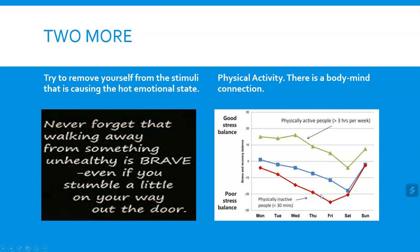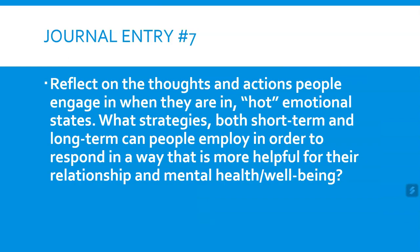Any combination of these four techniques should help you regulate those hot emotions. We all, as human beings, experience hot emotions — that's part of being human. However, as you develop your skills and techniques, you can regulate yourself into an emotional state that's more agreeable to you. Now we're going to write our journal entry: reflect on the thoughts and actions people engage in when in hot emotional states. What strategies, both short-term and long-term, can people employ to respond in a way that is more helpful for their relationships, mental health, and well-being? Hopefully this was helpful, and I appreciate you watching.